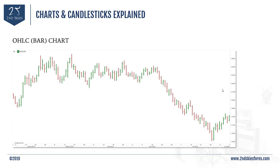The next one is the open, high, low, and close chart, also called the bar chart. It's made up of vertical bars showing the price range of the applicable timeframe. Each vertical bar in this chart represents one day of price action, simply because it's a one-day daily EURUSD chart.